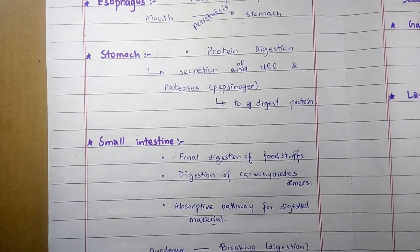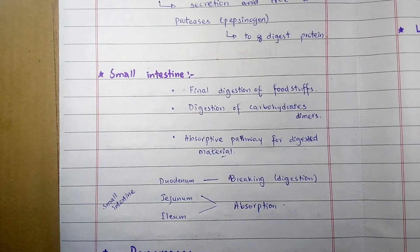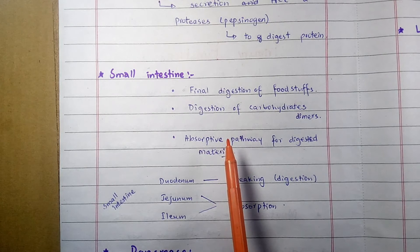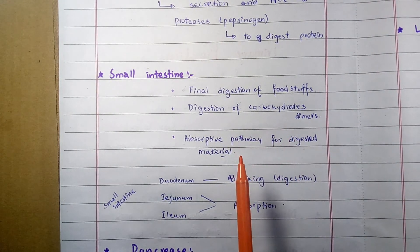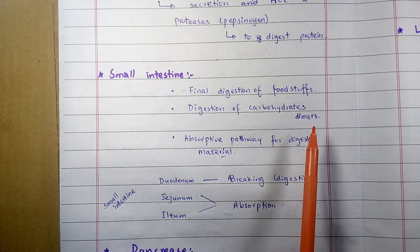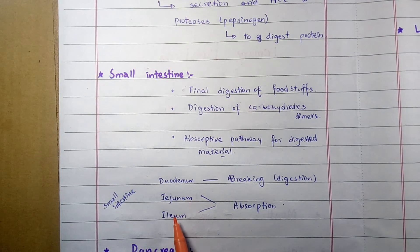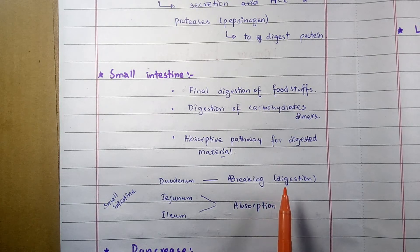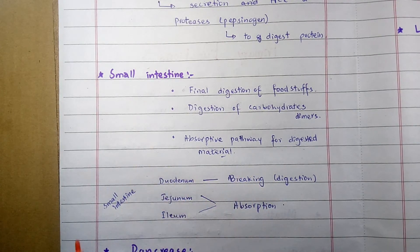The small intestine is about 24 feet long muscular tube. It is the organ where the final intraluminal digestion of food and digestion of carbohydrate dimers occurs, using enzymes released by the pancreas and bile from the liver. It has three segments: the duodenum, jejunum, and ileum. The duodenum is responsible for the breaking process, and the jejunum and ileum are involved in absorption of nutrients into the bloodstream.